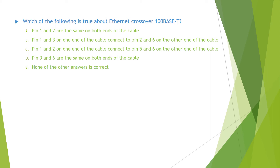Which of the following is true about Ethernet crossover 100BASE-T? Options: pin 1 and 2 are the same on both ends of the cable; pin 1 and 3 on one end connect to pin 2 and 6 on the other end; pin 3 and 6 on one end connect to pin 3 and 6 on the other end — i.e., pin 3 and 6 are the same on both ends; none of the other answers is correct.